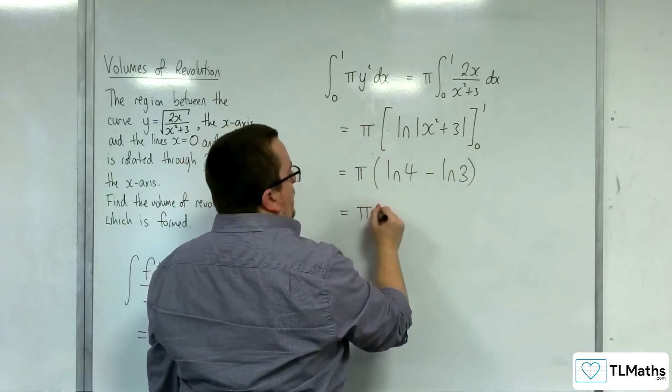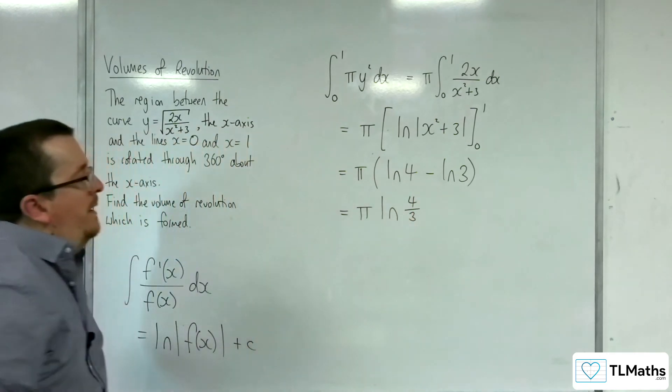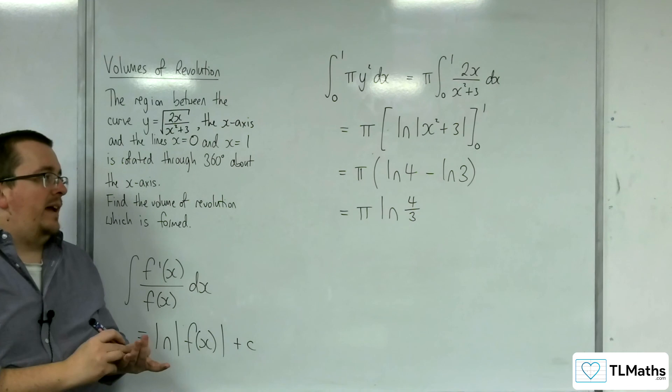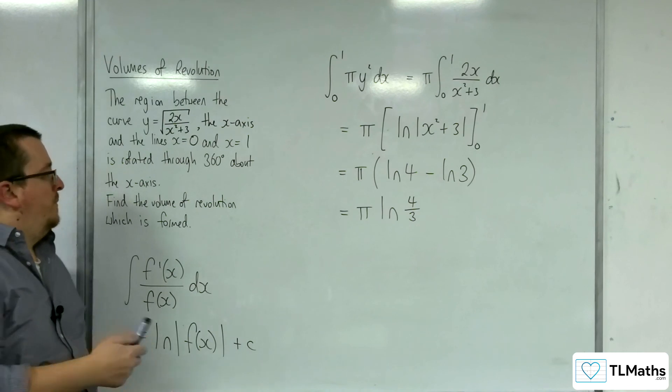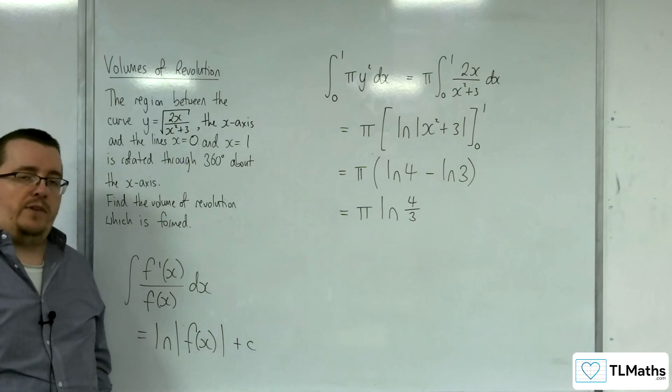Then I could write that as pi times the natural logarithm of 4 thirds. And so, that is the exact volume of the solid that's formed when you rotate this curve about the x-axis.